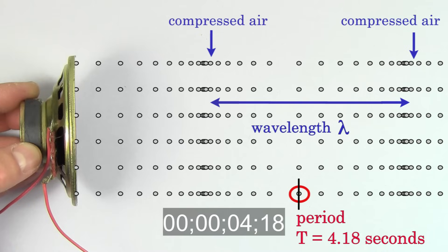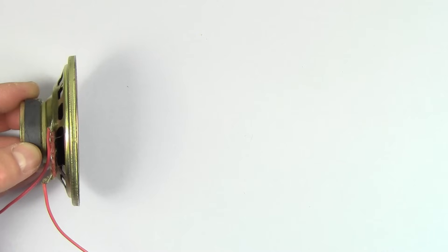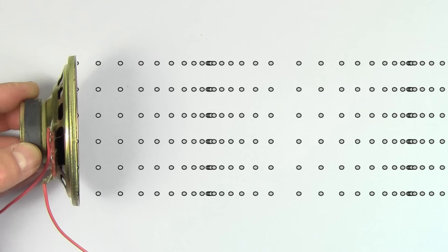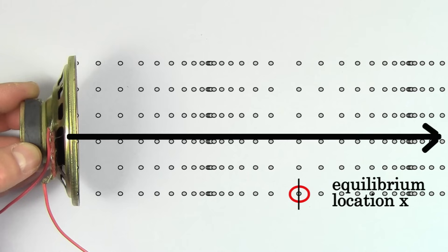People get these mixed up because there's an alternate way to create a graph of this sound wave. Consider this: before the wave moves through the air, each air molecule has some undisturbed position from the speaker that we can measure in meters. This number represents the equilibrium undisturbed position of that air molecule.